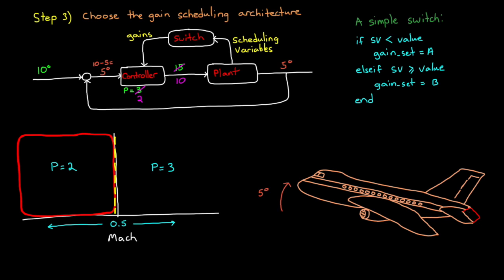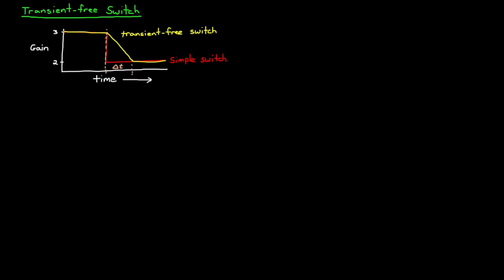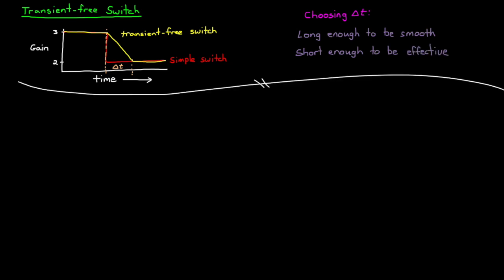One way to get around this problem is by implementing a transient-free switch. This type of switch doesn't jump the output of the controller instantly, because it generates a smooth transition between the two gain sets. For example, smoothly ramping down from three to two over some specified time period. This will remove that sudden transient, but it might be a bit tricky to set up. This is because you need to set the transition time long enough so that the transient is smoothed out, but not so long that the gain can't transition fast enough.